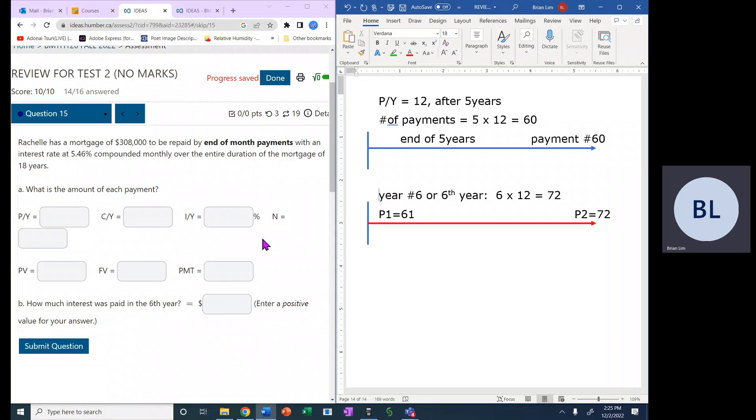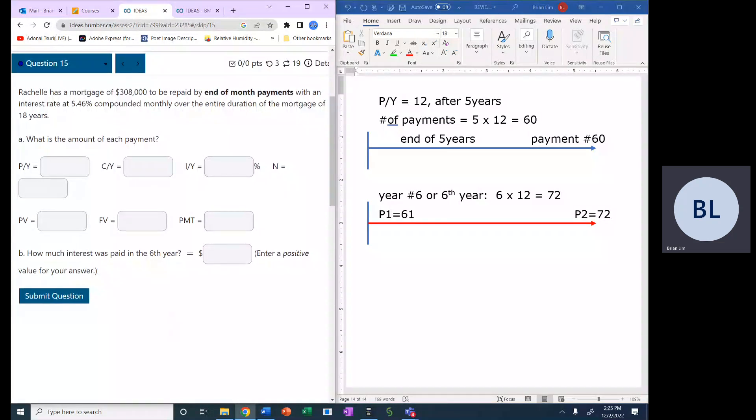Okay, question number 15. Rochelle has a mortgage of $308,000 to be repaid by end of month payments with an interest rate at 5.46% compounded monthly over the entire duration of the mortgage of 18 years.